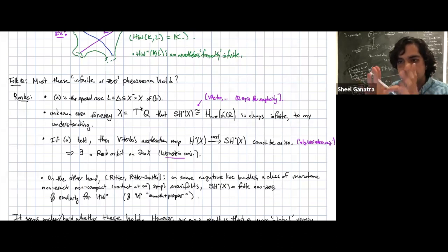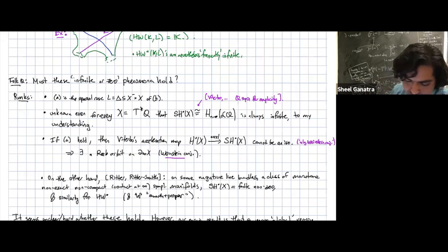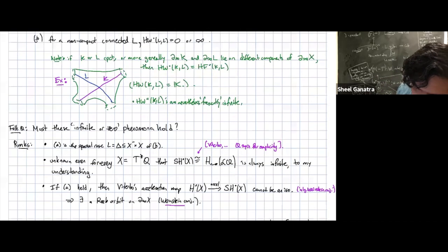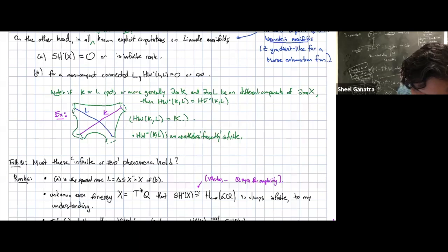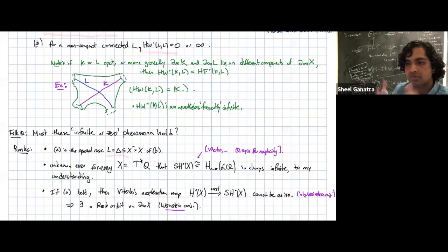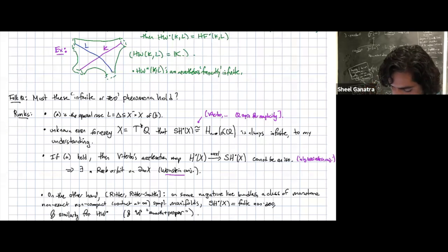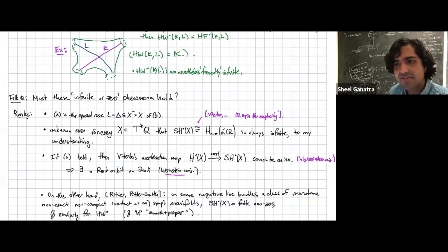I'm not sure this is expected to be true in this level of generality — it could be the case by accident that Floer differentials cancel out everything but finitely many cohomology classes. Case A about symplectic cohomology is the special case of L equal to the diagonal of case B. At this point, to my knowledge, it's unknown for every cotangent bundle — at least assuming Q is spin, we have an isomorphism with free loop homology — that this is always infinite.